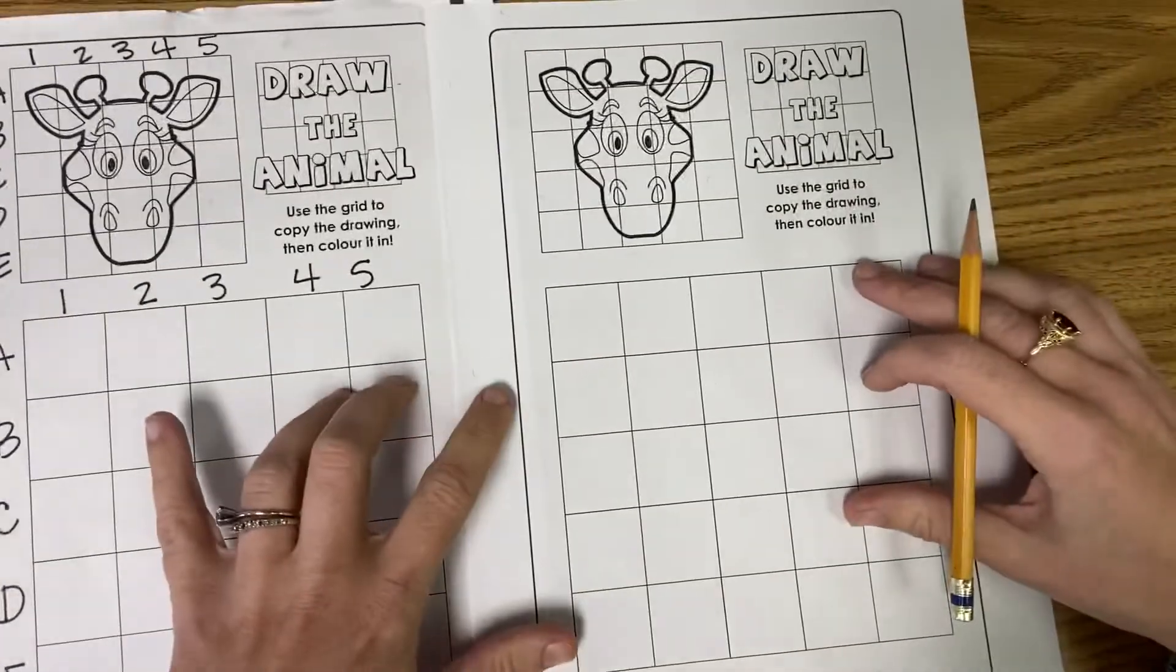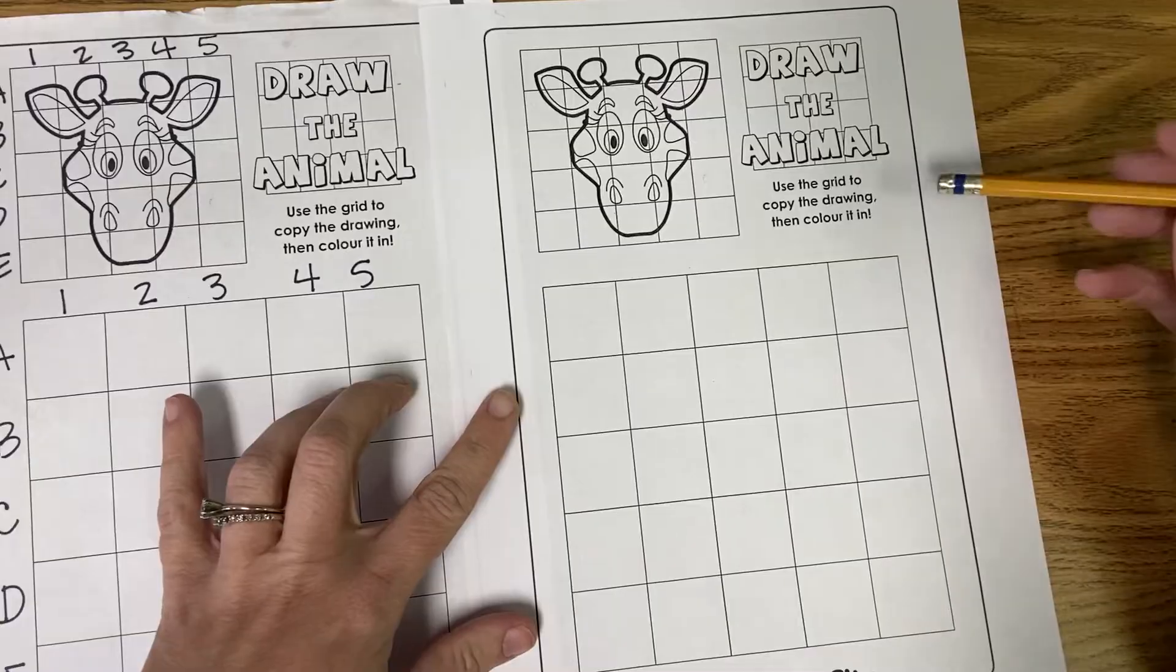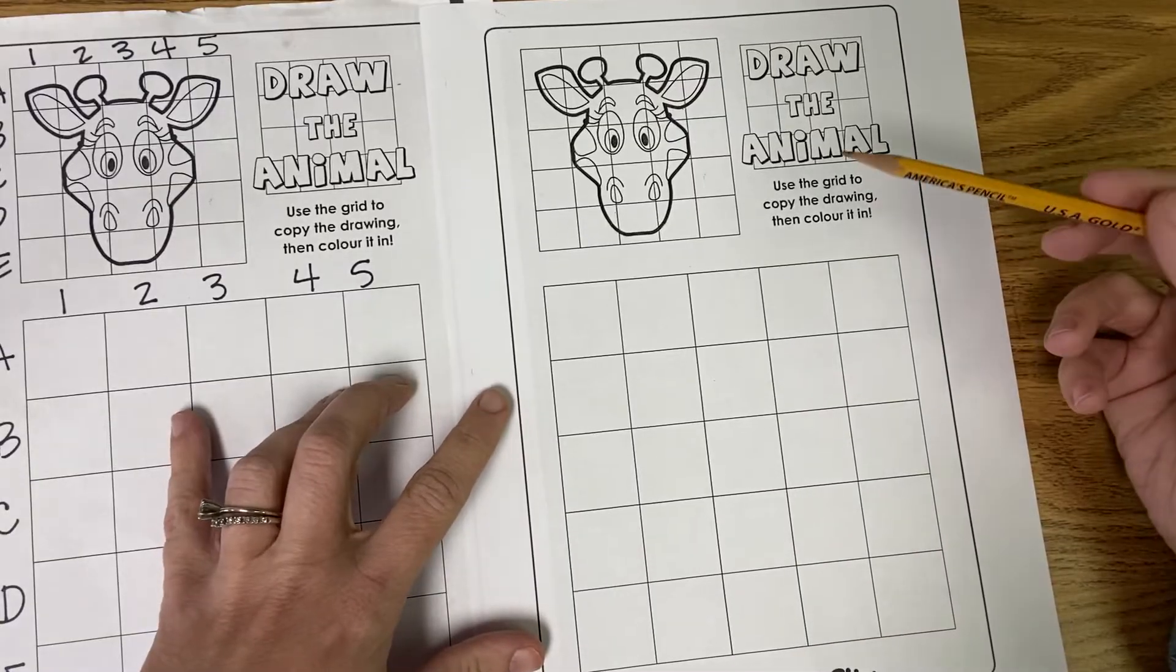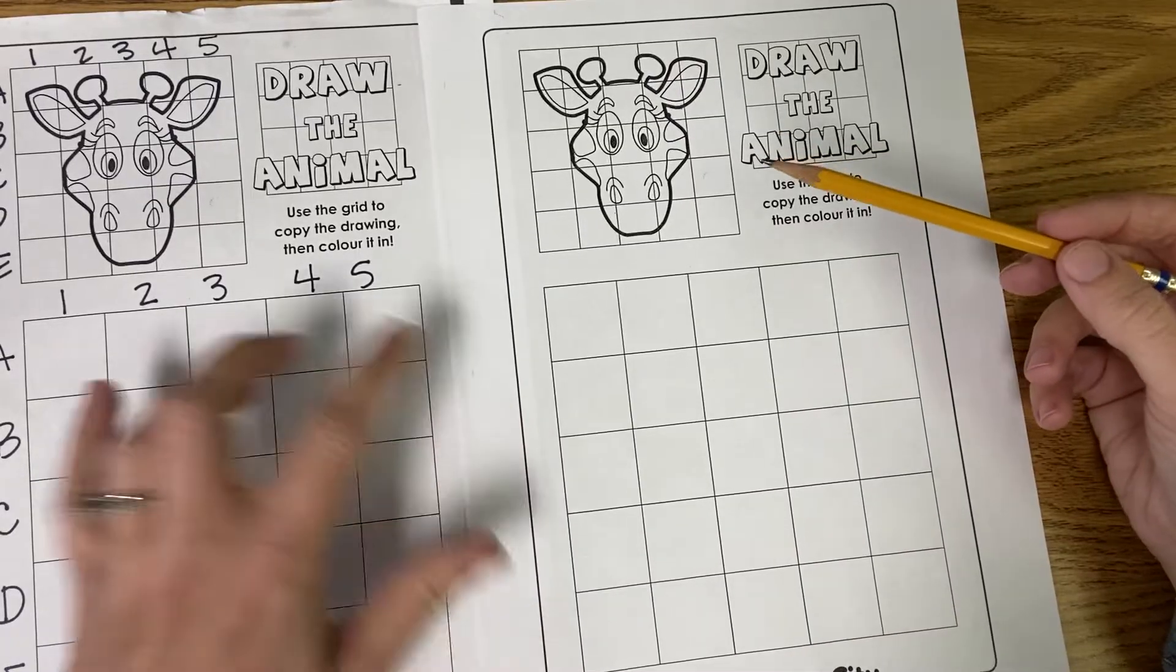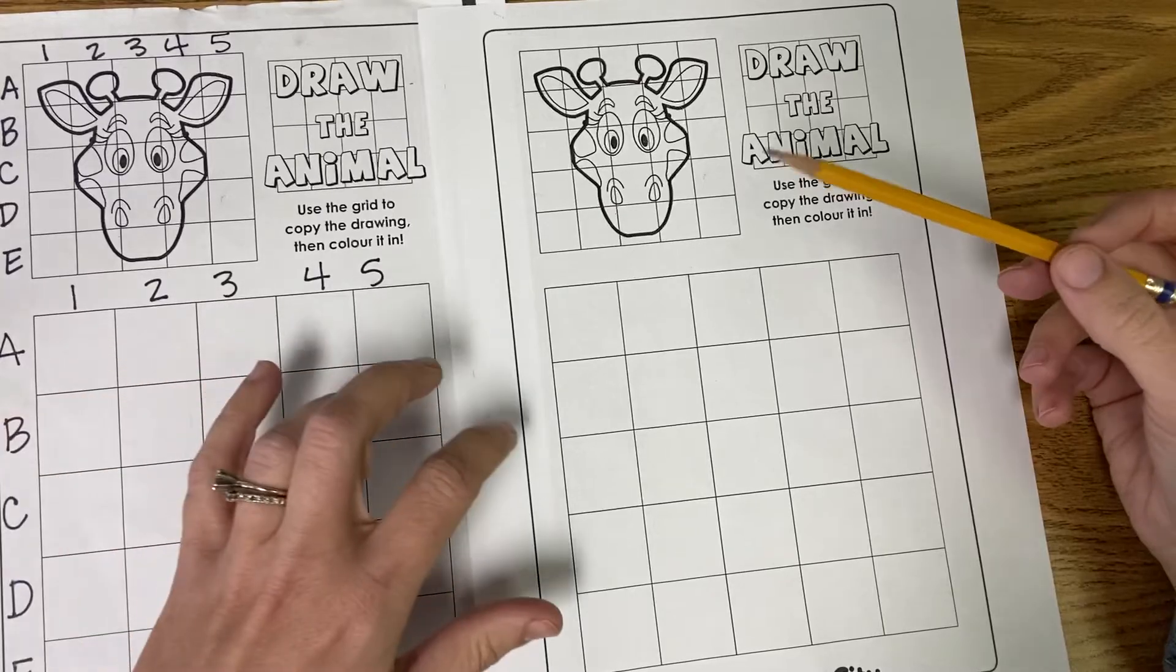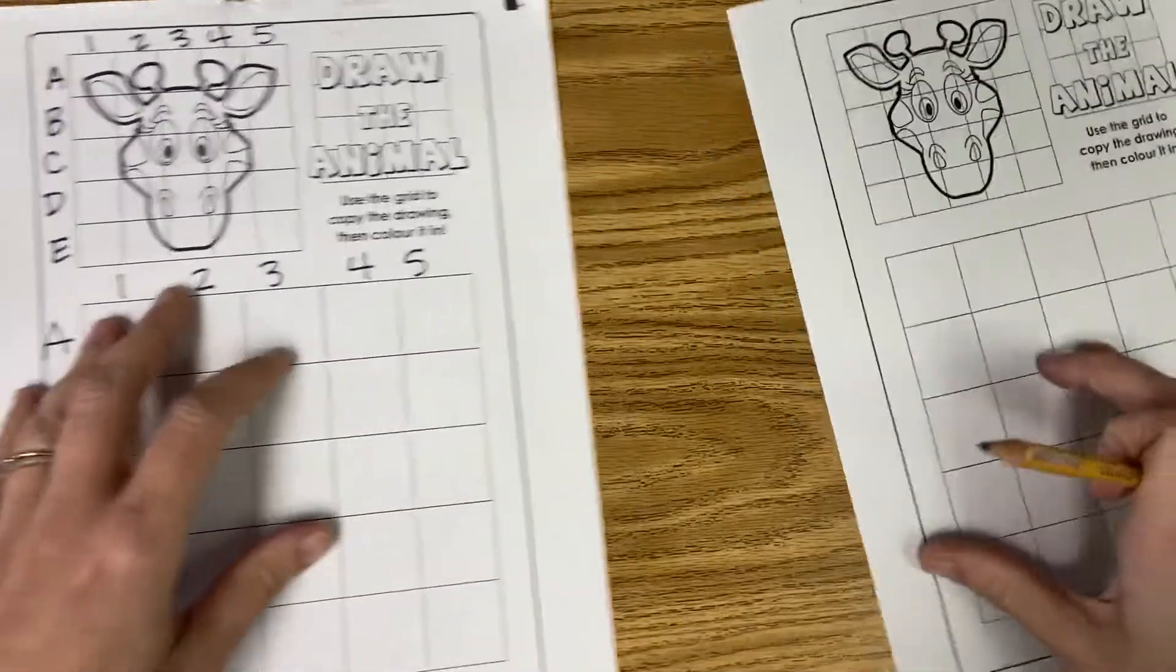So this is what they look like whenever we print them off and I have discovered whenever I am teaching this that it helps if we label the grid. So I'm gonna show you how we're gonna label the grid on this sheet of paper.